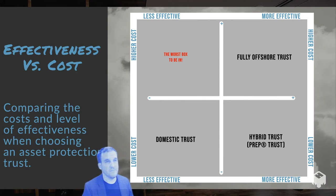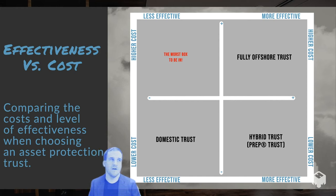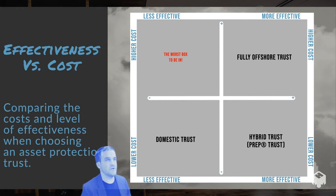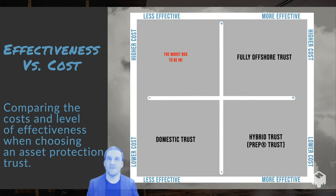So this creates these different boxes that you'll see. Higher cost, less effective — definitely don't want to end up in that box for your asset protection trust.